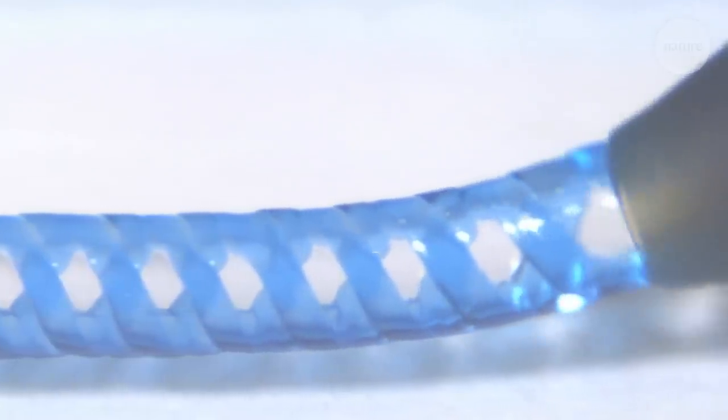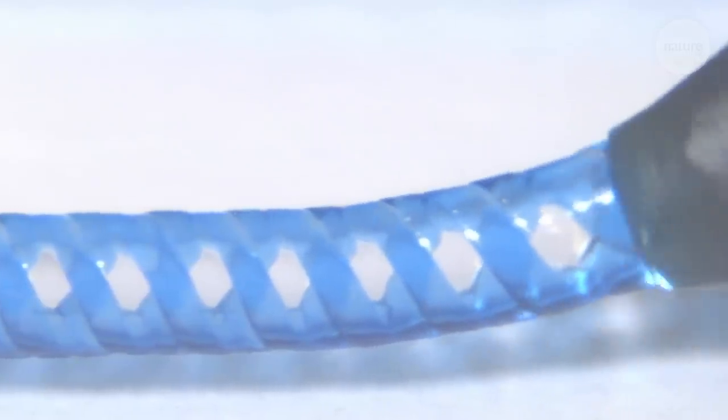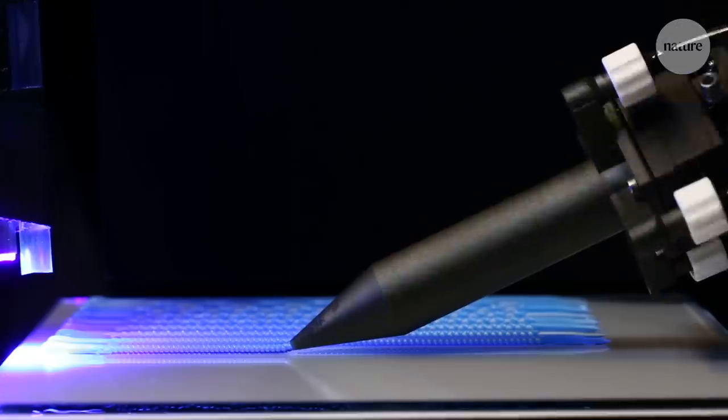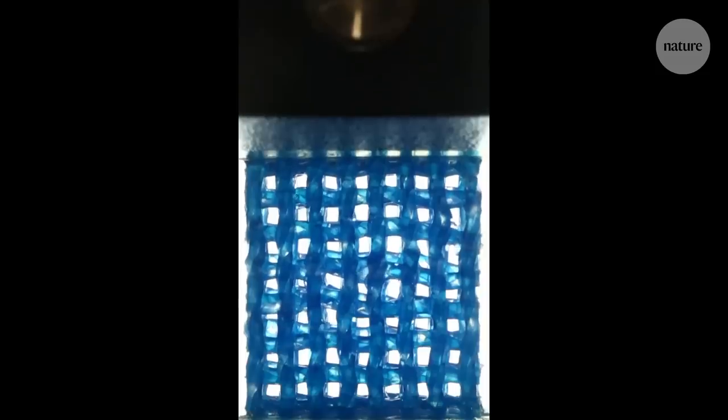In another demonstration, the team made filaments with different properties in different sections by changing the angle of the helix. In this lattice, the helix angle and therefore the properties are the same throughout, as you can see when the lattice is stretched to breaking point.